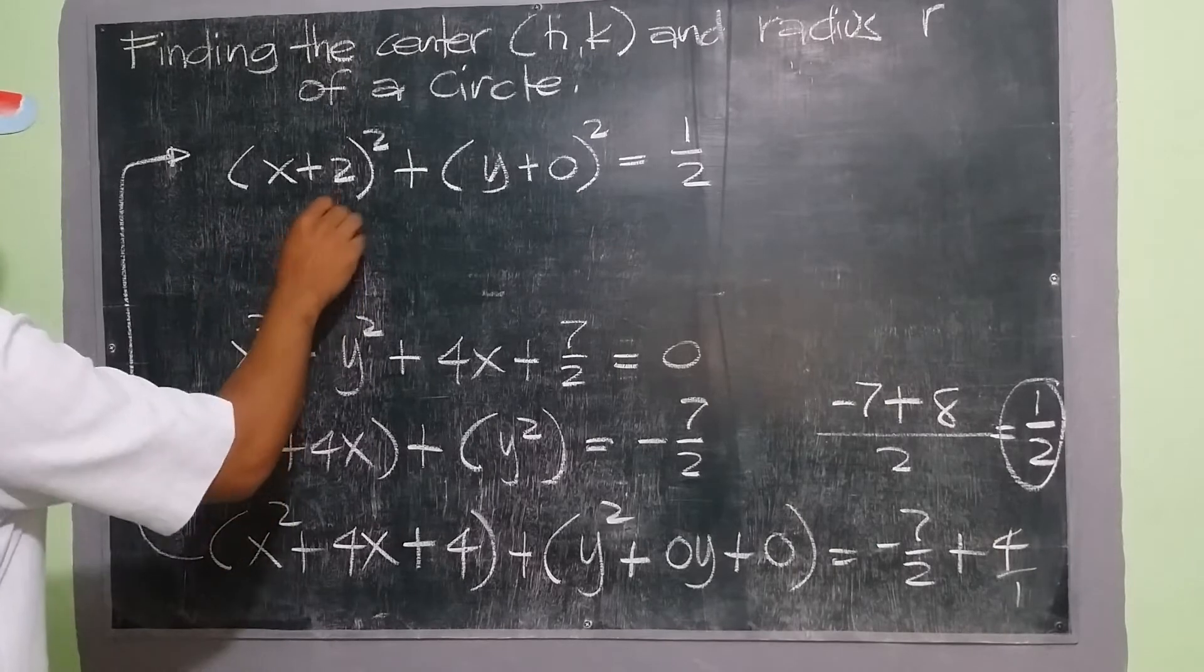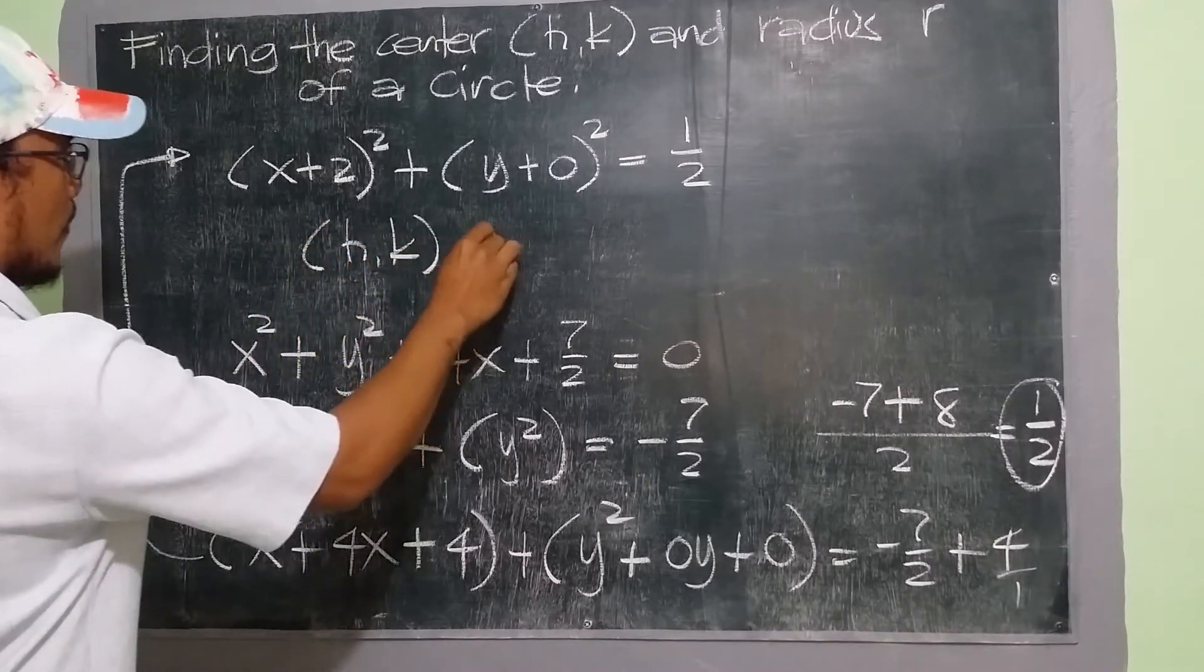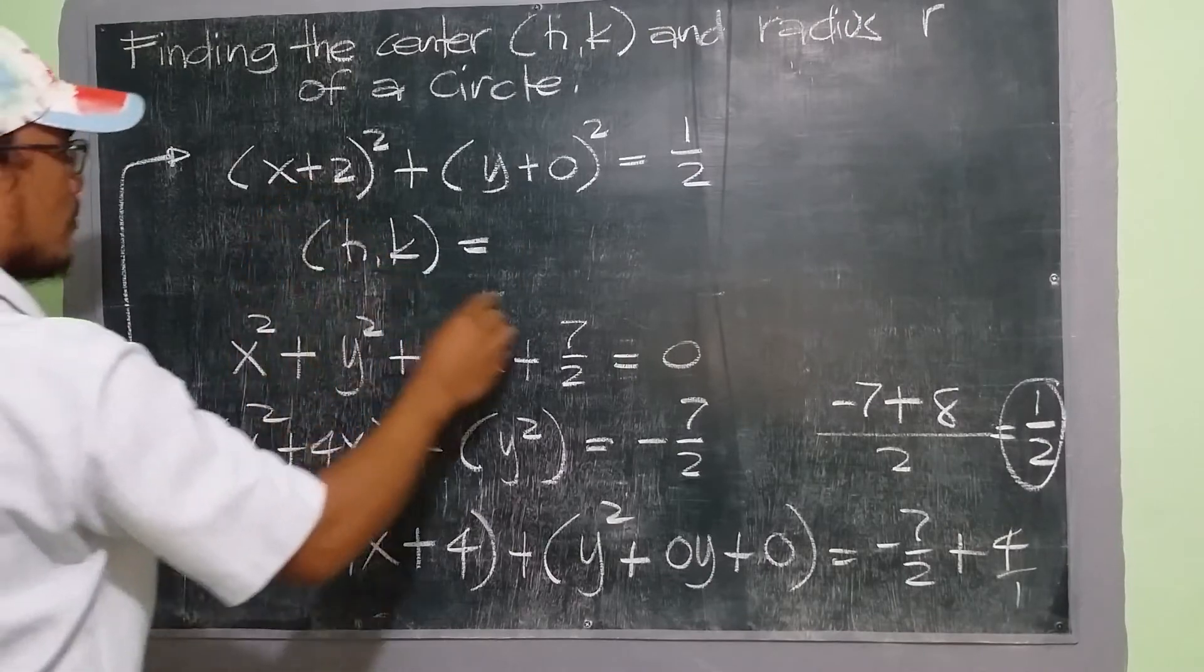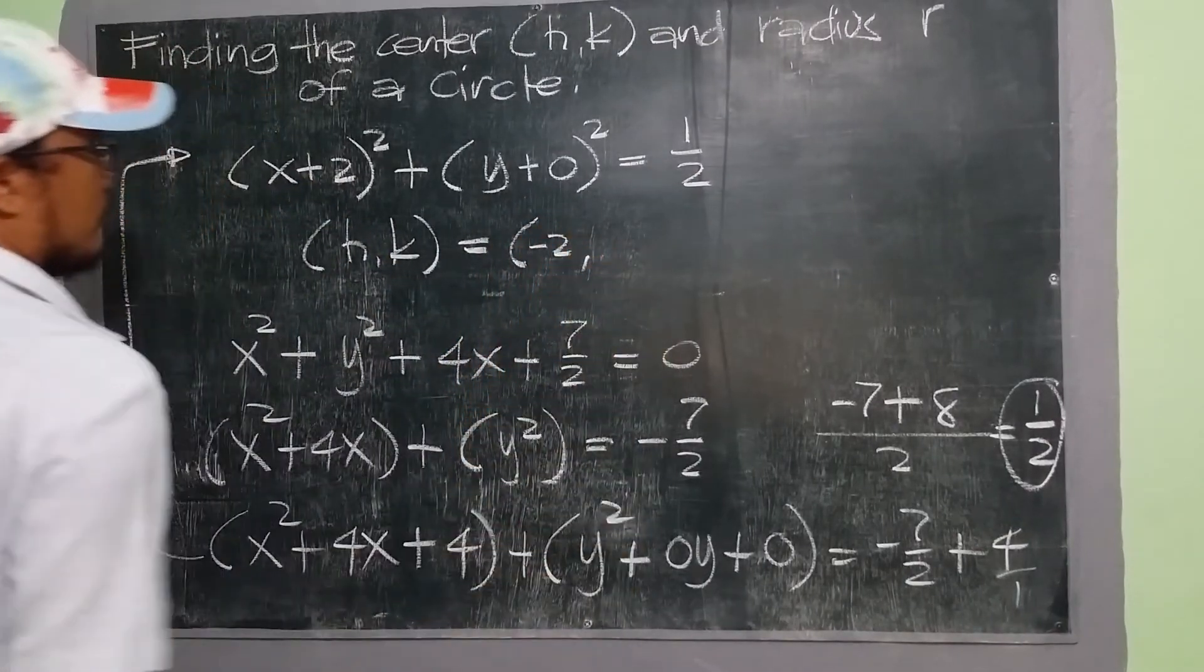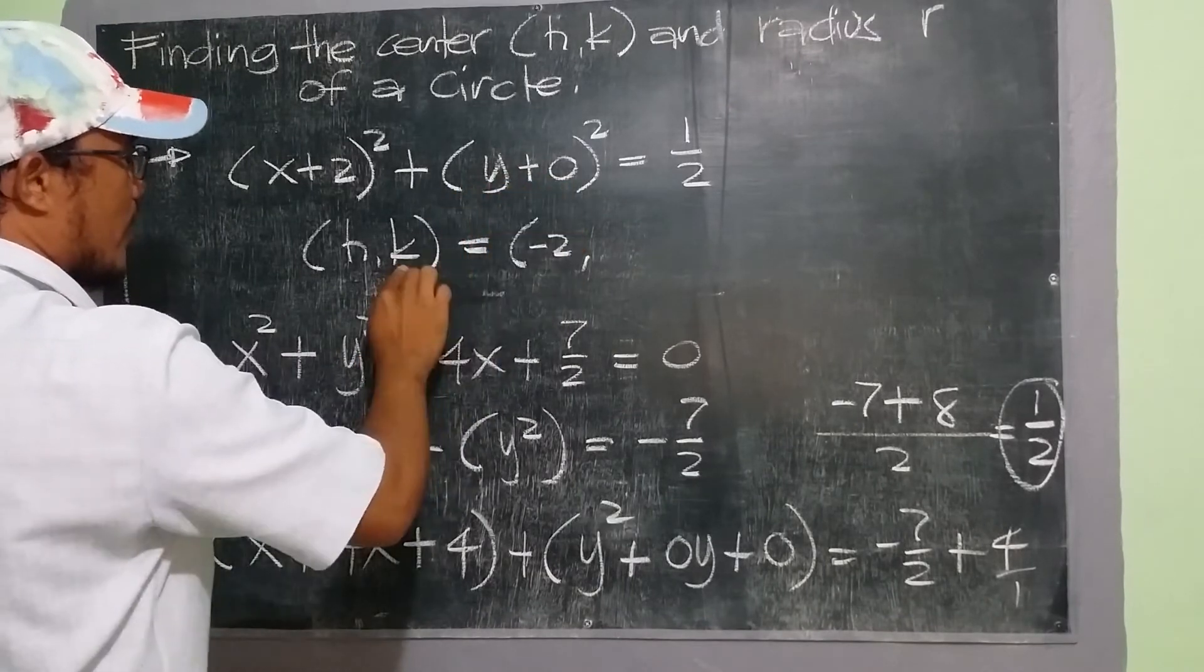So here we have our (h,k). Our h is, since it is positive, therefore we have negative 2. So we have here y plus 0, so our k is 0.